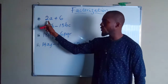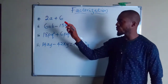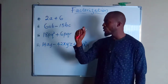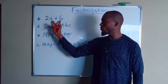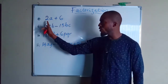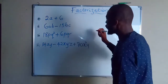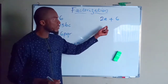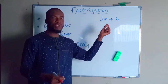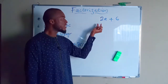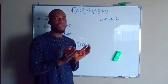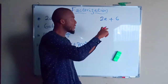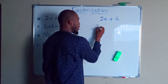For instance, look at this first expression: we have 2a plus 6, and we want to factorize this. The first term contains a number and a letter, while the second term contains only a number. So we are not going to consider letters on both terms, but rather the numbers. The GCF here is the greatest number that can go into 2 and 6 without remainder — and that number is 2.